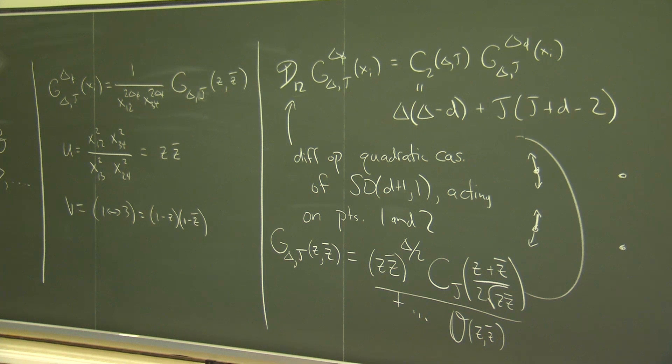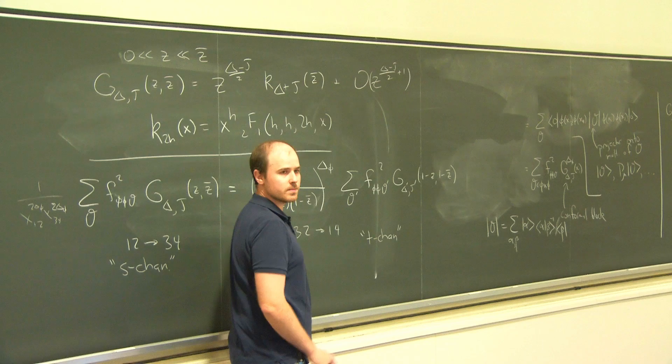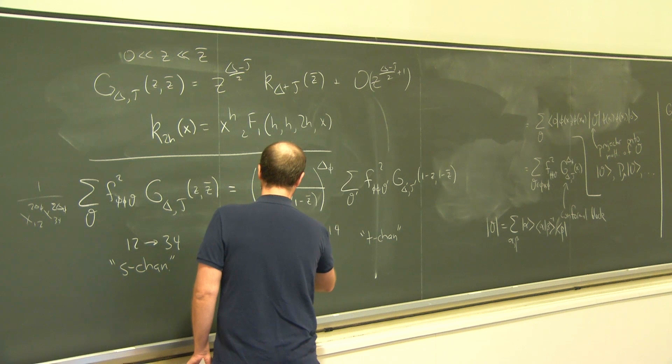To get to the crossing equation: you start with the conformal block decomposition, which has dimensionful factors on one side, and on the other side the same thing with 1 and 3 swapped. Then you multiply through by these factors and rewrite the ratio of the factors in terms of cross ratios. This factor comes from x_{12}^2 x_{34}^2 over x_{13}^2 x_{14}^2 x_{23}^2, all to the power delta-phi.